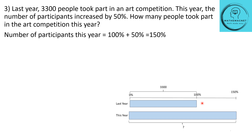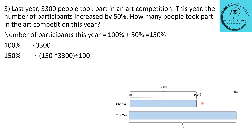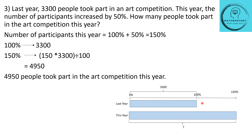The number of participants this year is 100% + 50% = 150%. So 100% is 3300, and 150% becomes 150 × 3300 ÷ 100, which is equal to 4950. So 4950 people took part in the art competition this year.